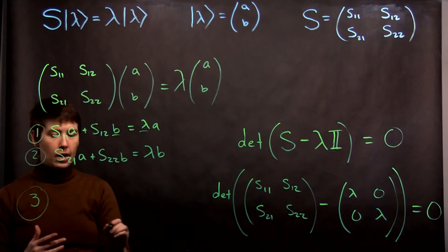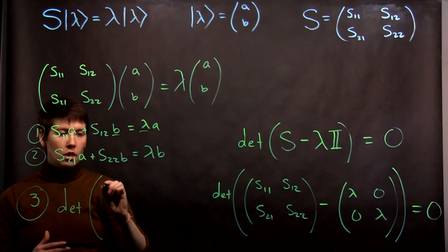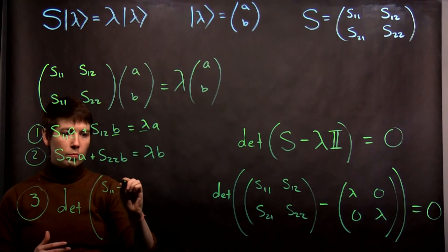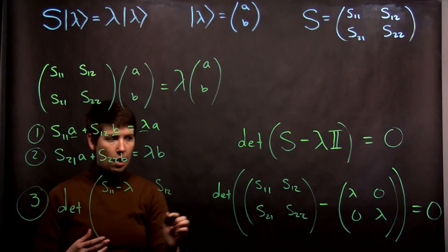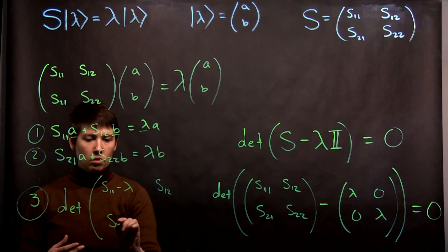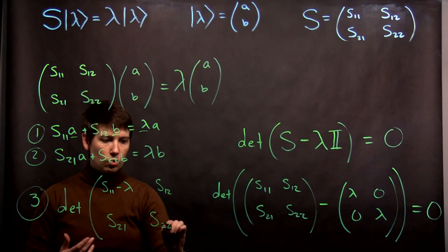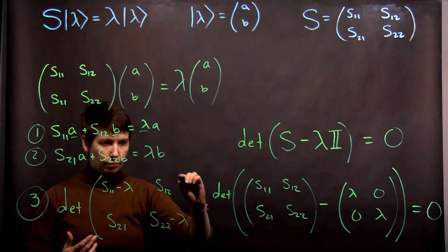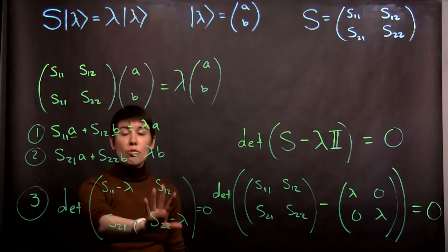I won't write it all the way out, but the determinant of S11 minus lambda and then S12 minus zero, so we don't need to put that, S21 minus zero, again we don't put it, S22 minus lambda. And we're going to say that that is equal to zero. So that's our third equation.